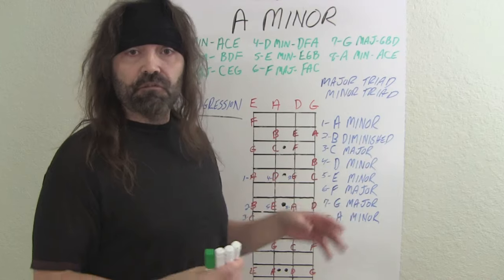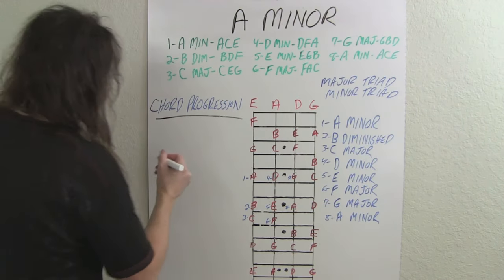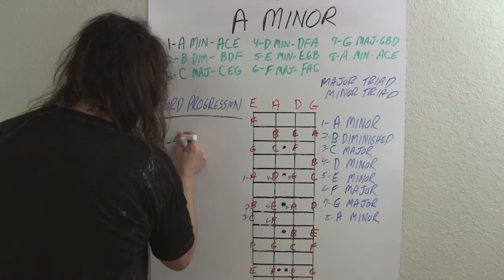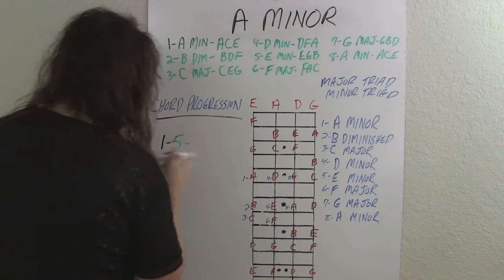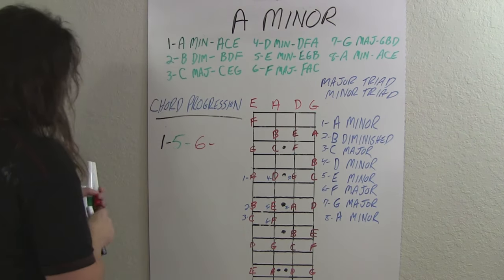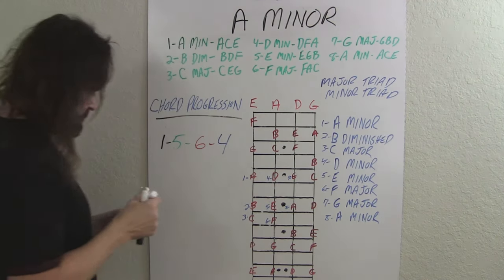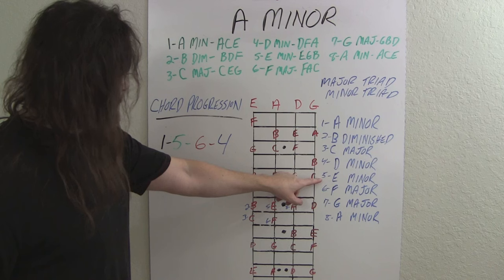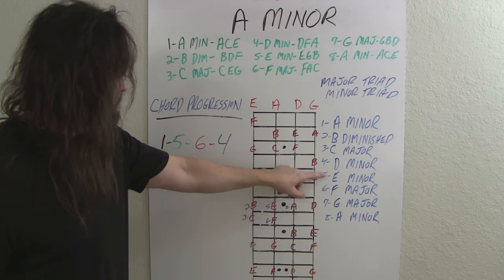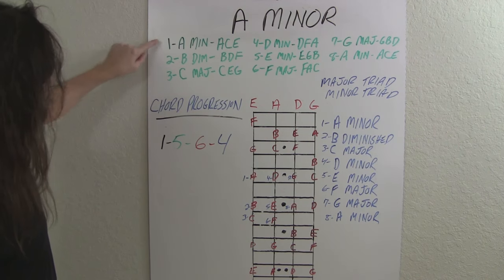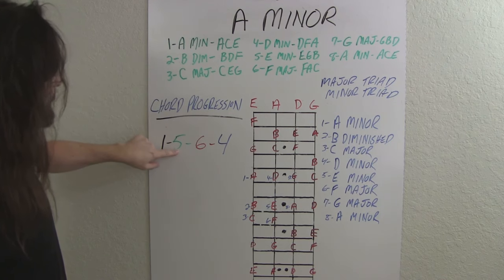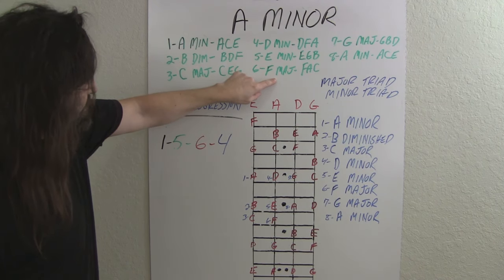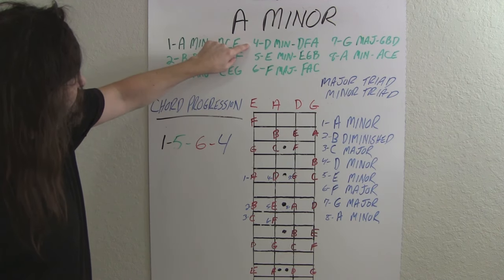Now we're going to apply these triads to a chord progression — a 1-5-6-4. That's going to be A minor, E minor, F major, and then D minor. So you're going to be playing: the one, which is an A minor triad; the five, which is an E minor triad; the six, which is an F major triad; and then back to the four, which is a D minor triad.